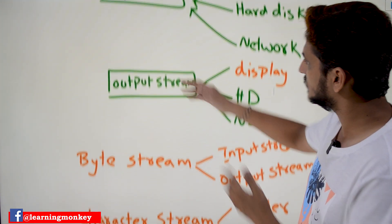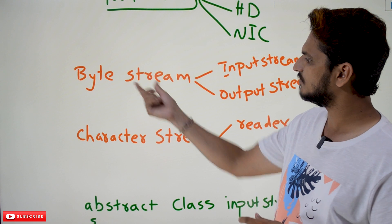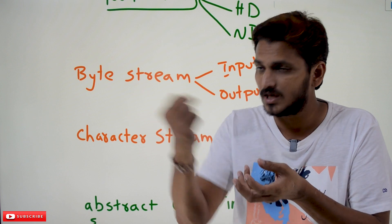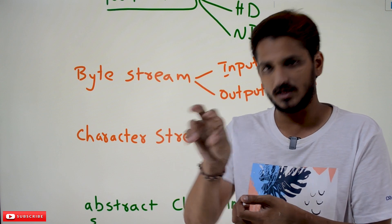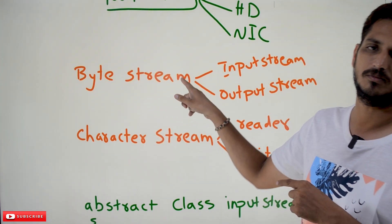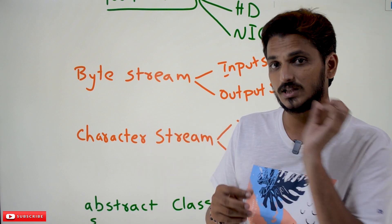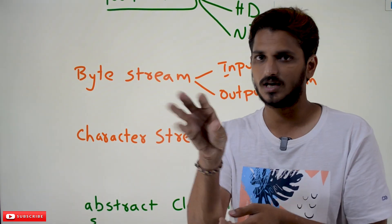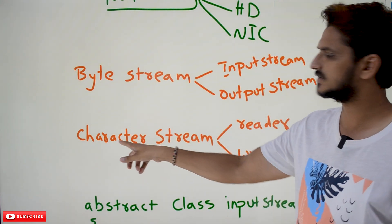We are having two types of input and output streams: one is byte stream and the other one is character stream. If the input stream reads data from the keyboard or hard disk in the form of bytes — first byte, second byte, read the next byte — that is what we call a byte stream. If the input data is read using characters — send the first character, send the next character, read the next character — we call that character streams.